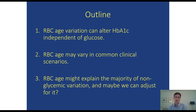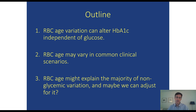I'd like to provide evidence suggesting that red blood cell age variation can alter A1c independent of glucose, then discuss common clinical scenarios where red blood cell age varies, and finally present evidence that red blood cell age variation may be the dominant source of non-glycemic variation in A1c. In the future, it might be possible to adjust A1c for red cell age variation and get a more accurate estimate of average glucose.